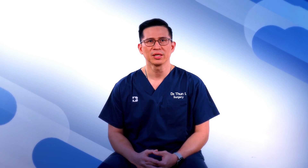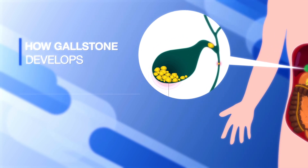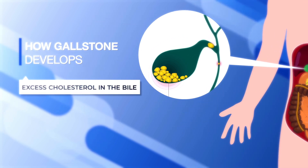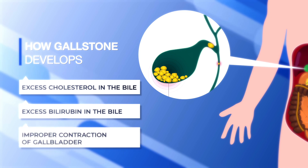Usually there are three reasons for causing gallstones. First, you have too much cholesterol in the bile. Second, you have too much bilirubin in the bile. And the last one is your gallbladder does not contract correctly or properly.